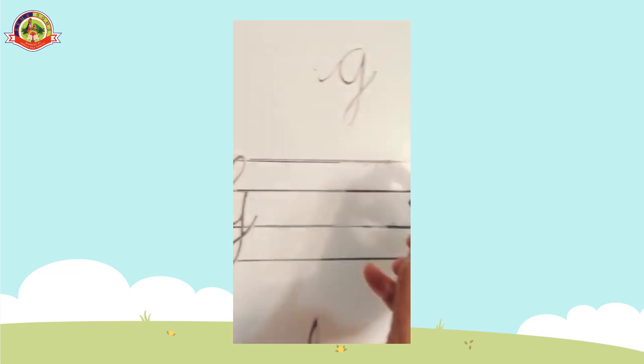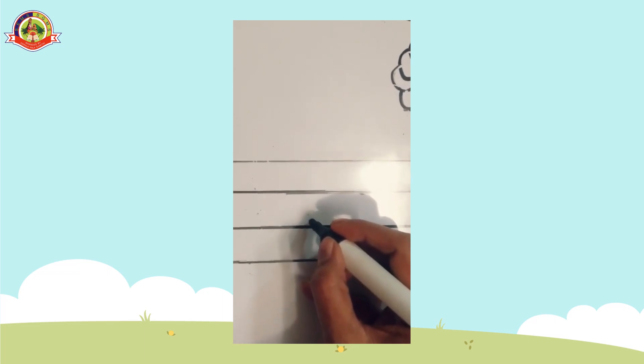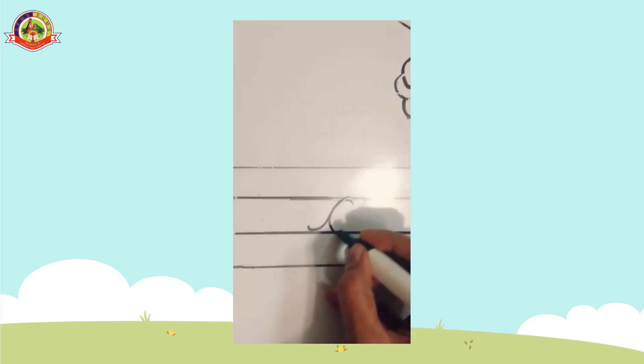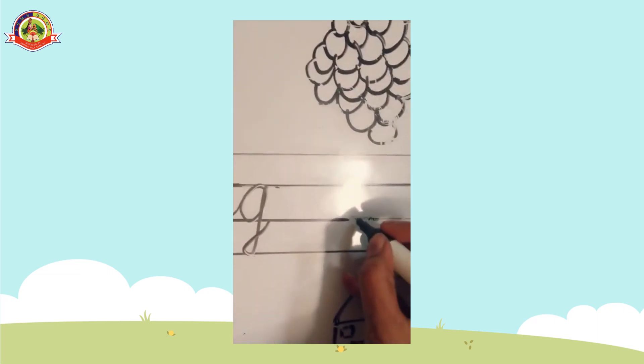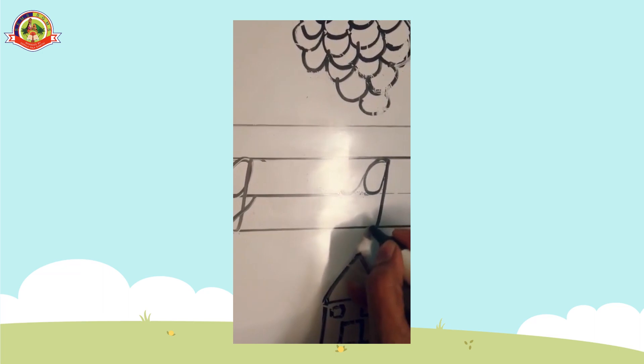Next, small cursive g. See how to write small cursive g. Starting from the third line. The second line. Like this. Once again, I am writing.